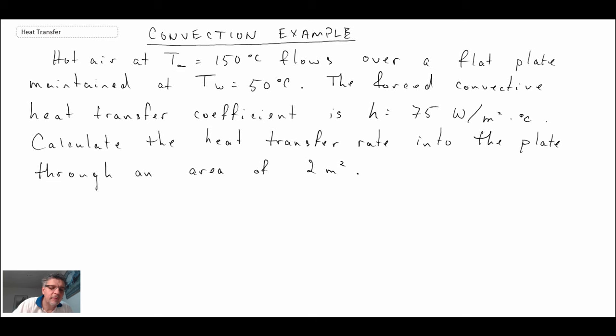So there is our problem definition. What we have is hot air at T_∞ = 150°C flowing over a flat plate maintained at T_w = 50°C. The forced convective heat transfer coefficient is h = 75 W/m²·°C. Calculate the heat transfer rate into the plate through an area of 2 m².